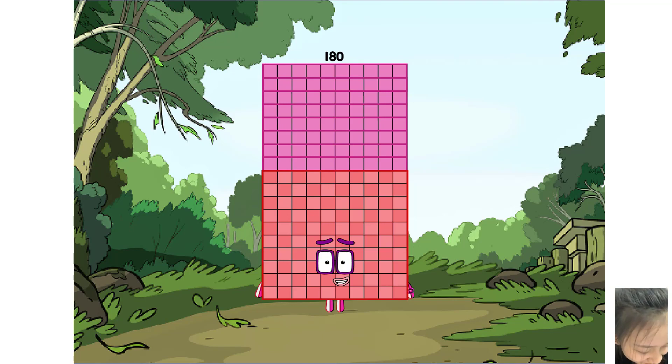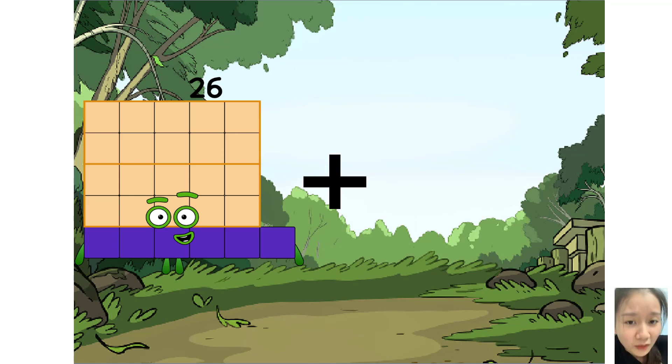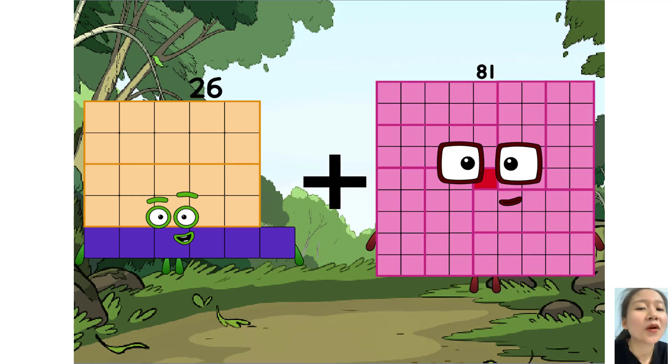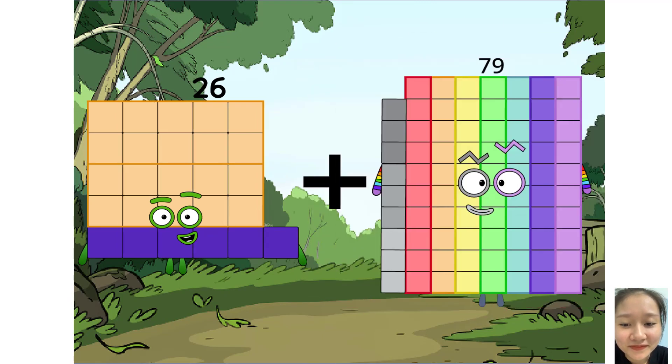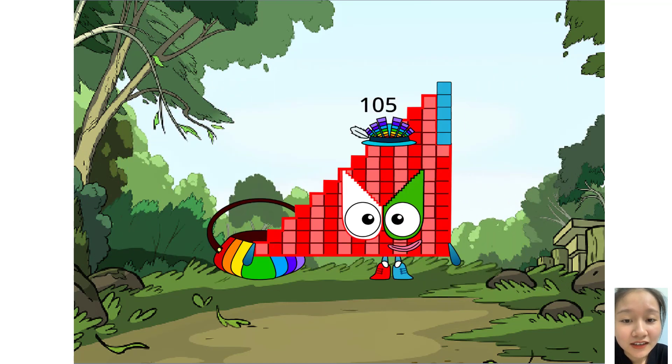Now, next question. 26 plus 79 equals 105. Yes, that is a correct answer. You are very good.